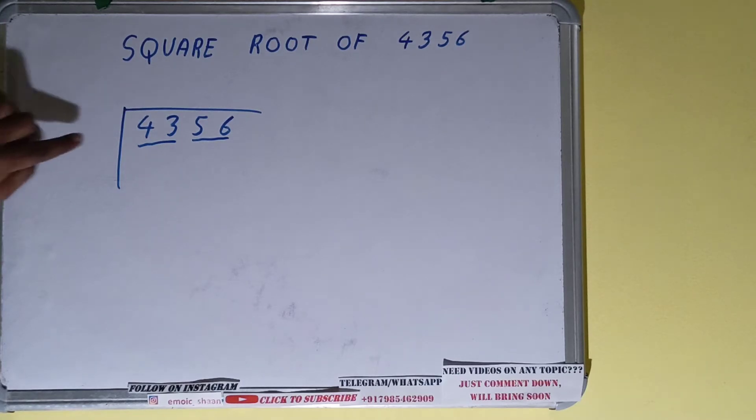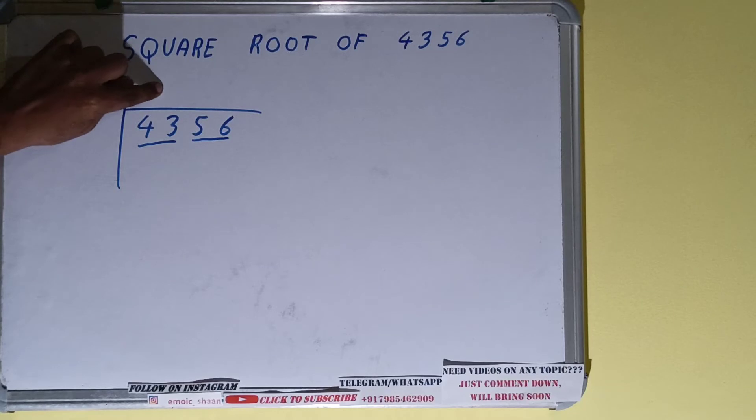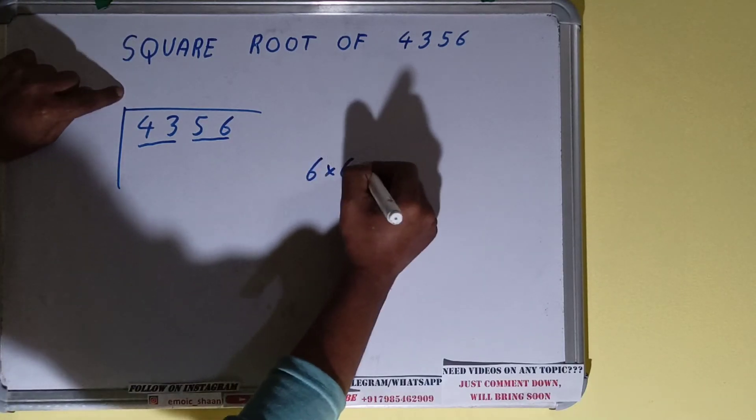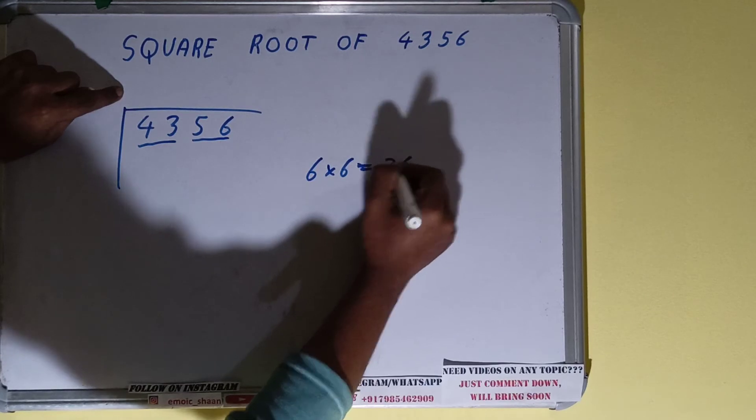The next thing we need to do is whatever divisor you have here, you have to take it as a quotient also. If we take 6 here, we have to take 6 here as well. It will be 36.